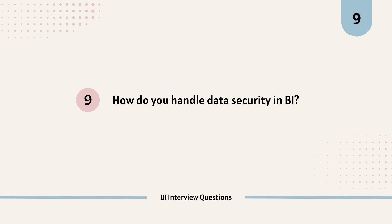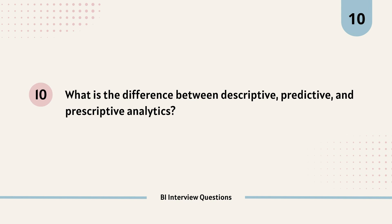The final question is: what is the difference between descriptive, predictive, and prescriptive analytics? Descriptive analytics — which is mostly what BI focuses on — involves analyzing historical data to understand what has happened in the past, using reporting and data visualization to summarize data. Predictive analytics uses statistical models and machine learning techniques to predict future outcomes and forecast trends based on historical data. Prescriptive analytics recommends actionable insights based on the results of predictive or descriptive analytics, providing suggestions to optimize decisions.